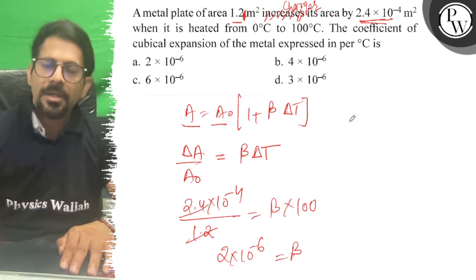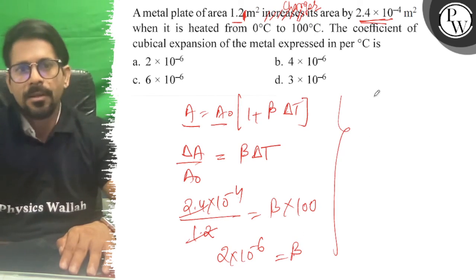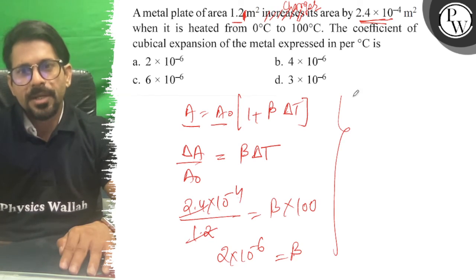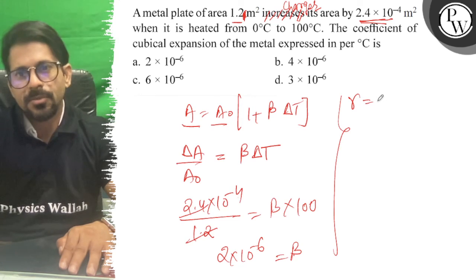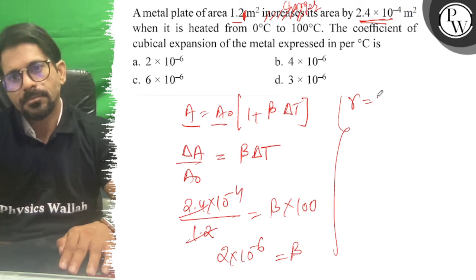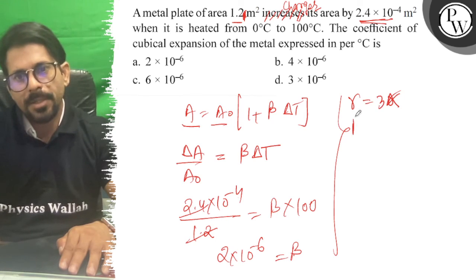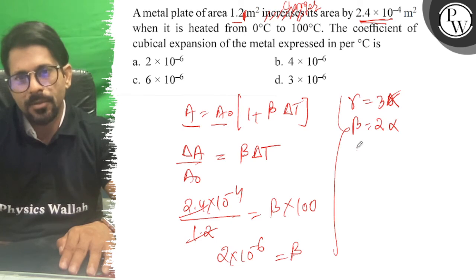We need the coefficient of cubical expansion, which is γ. We know that γ = 3α and β = 2α. So γ/β = 3/2, which means γ = (3/2)β.